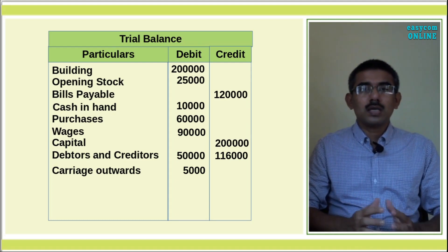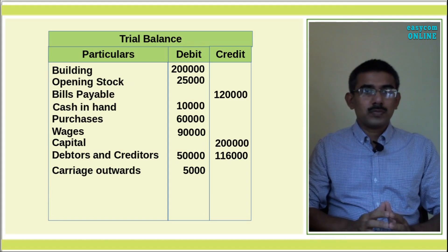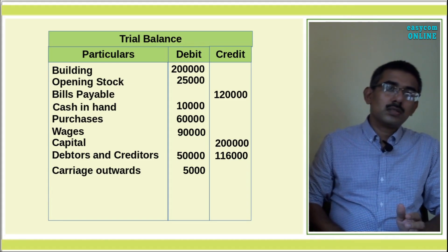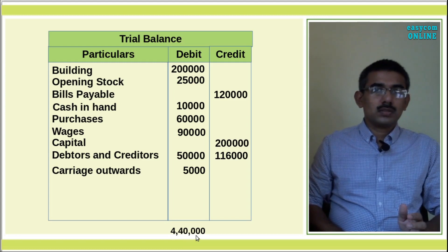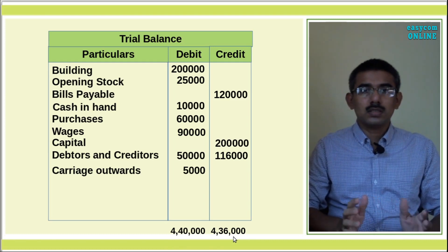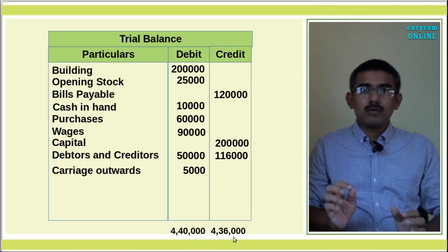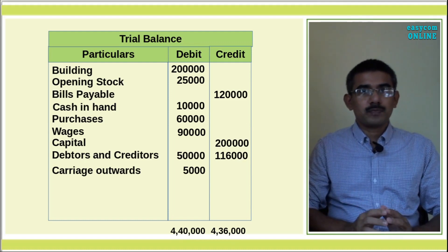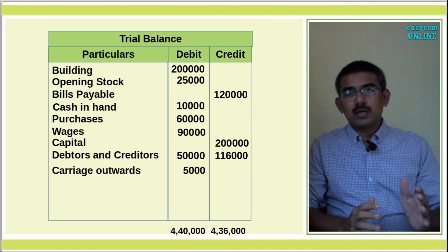The debit amount total is Rs.4,40,000 and the credit amount total is Rs.4,36,000. There is a difference in the totals. The debit total exceeds the credit total by Rs.4,000.